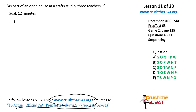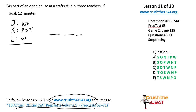Let's jump into the game. We have three teachers: J, K, and L. They're going to cover six consecutive presentations on six different subjects. In the past with sequencing games, it was clear who to list in slots one to six. Here we need to decide: do we list the teachers or the subjects — needlework, origami, and so forth? J presents needlework (N) and origami (O). K presents P, S, and T. L presents woodworking (W).